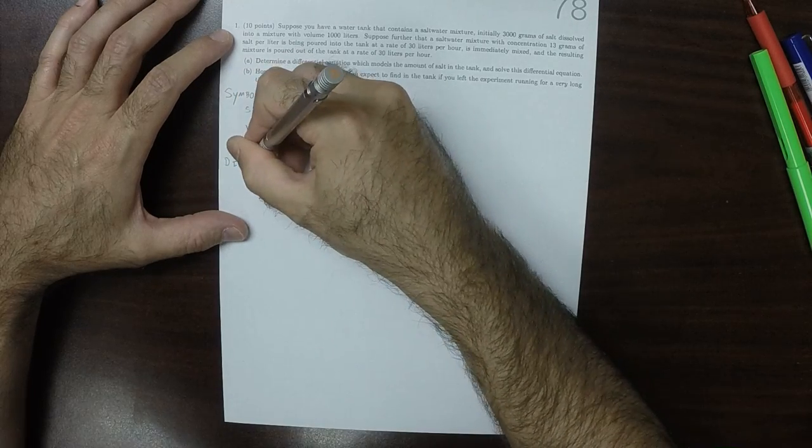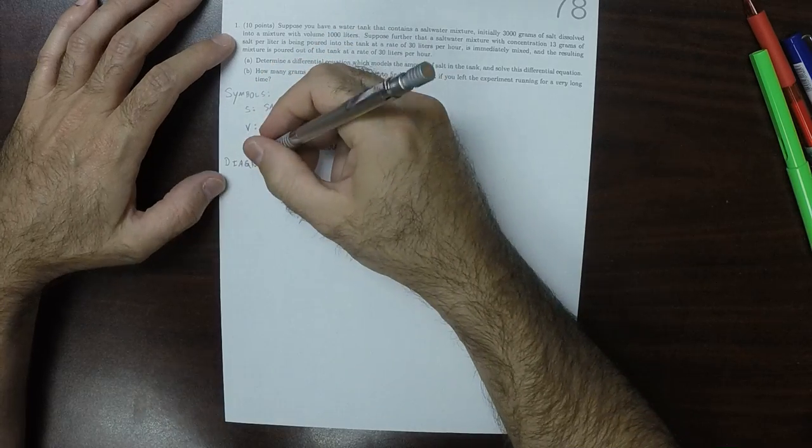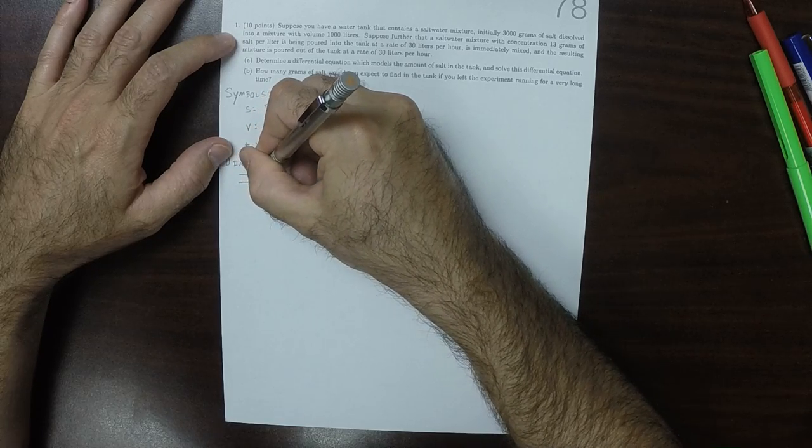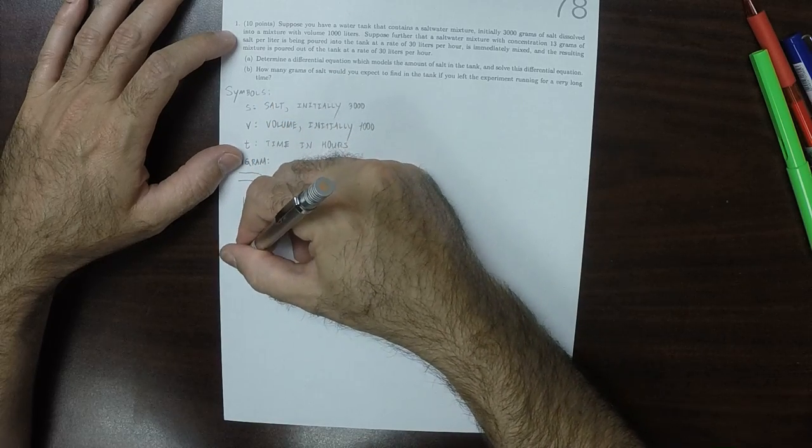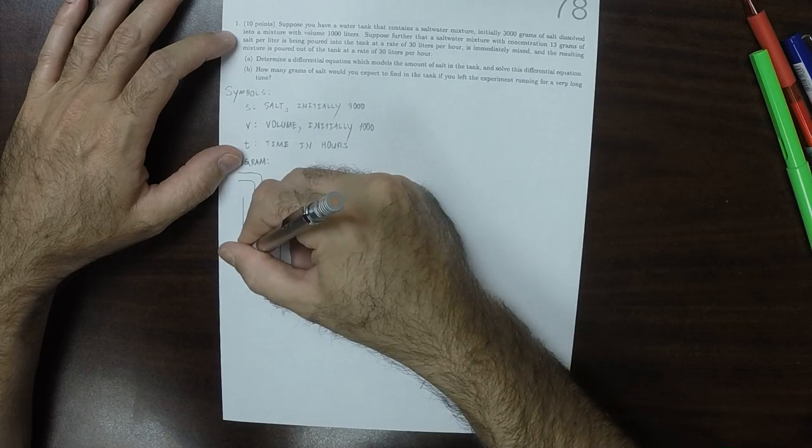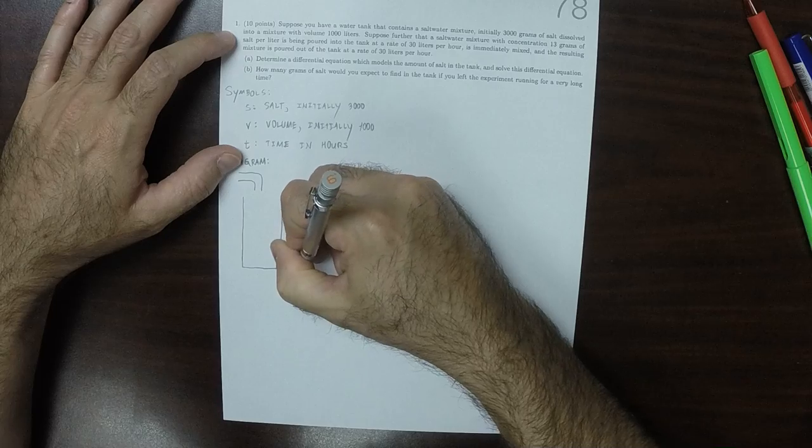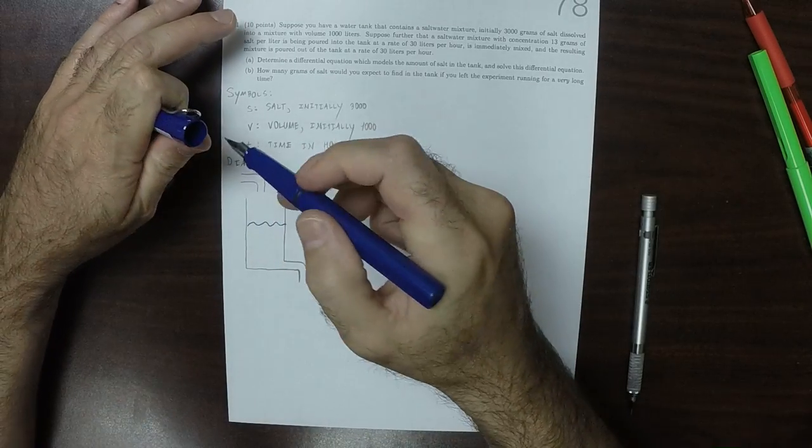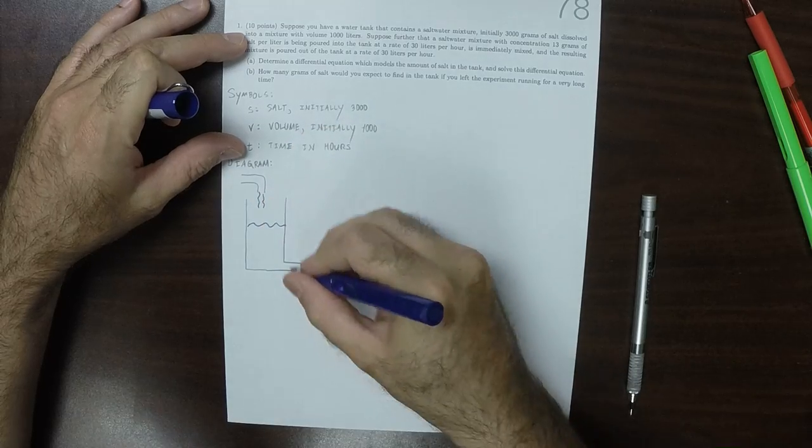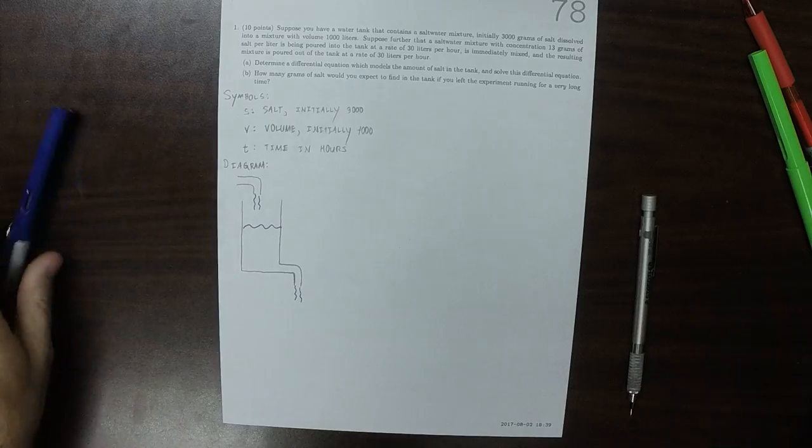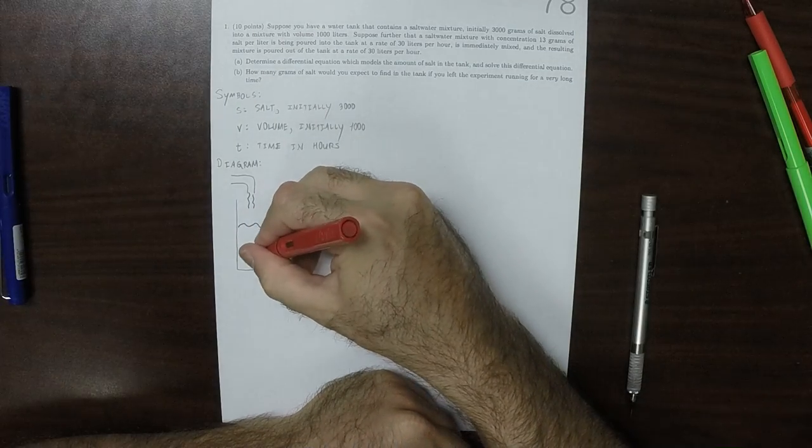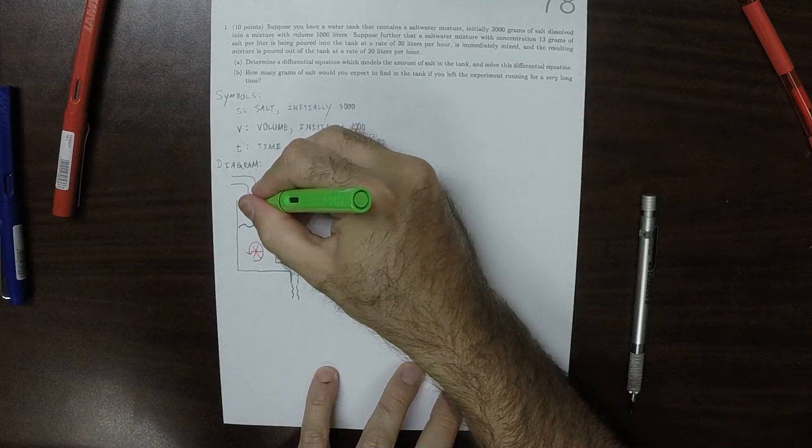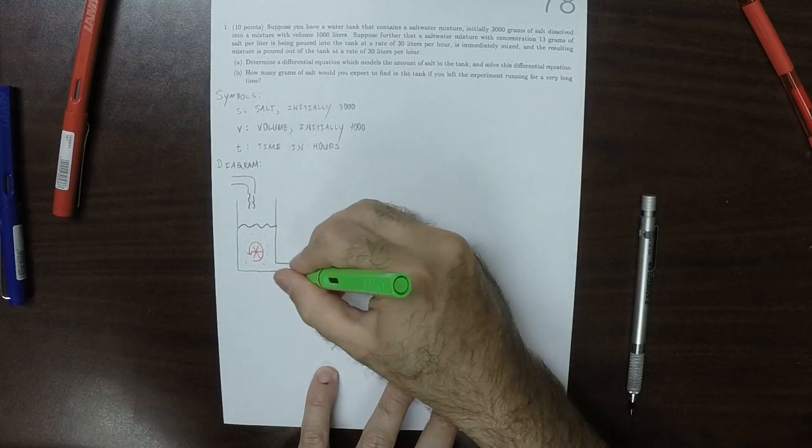Okay, so as a diagram, what's happening is that we have a flow of salty water coming into a tank and a flow of salty water leaving the tank. Salty water is going in, salty water is going out. It's all being mixed up somehow with some kind of fan stirring device. So salt is in the tank and coming out of the tank.